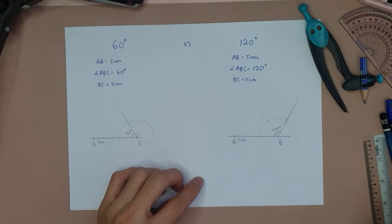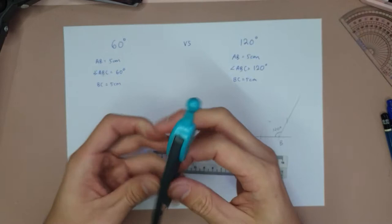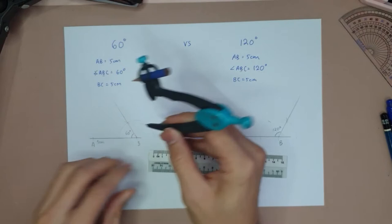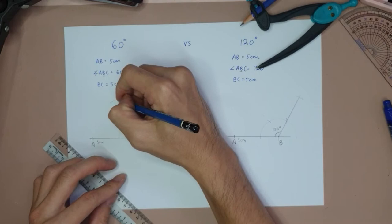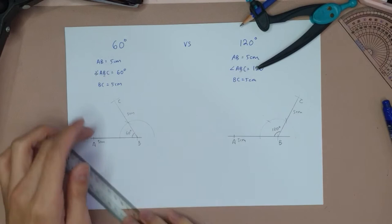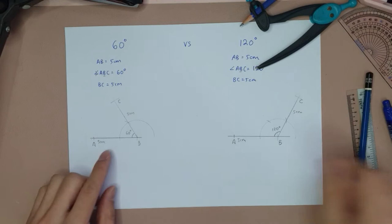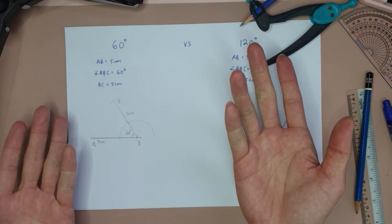Don't forget the BC = 5 cm. Take your ruler, place it at B along the 60-degree or 120-degree direction, measure 5 cm, and mark point C. That completes your 60-degree and 120-degree construction.